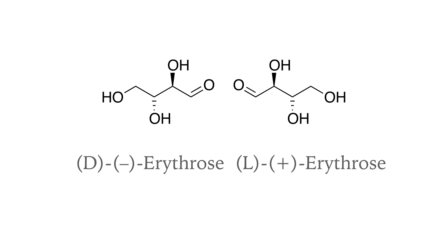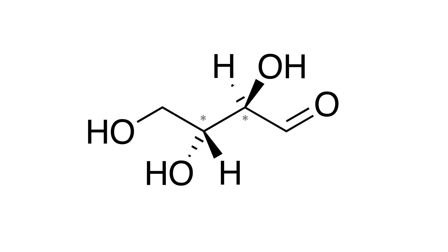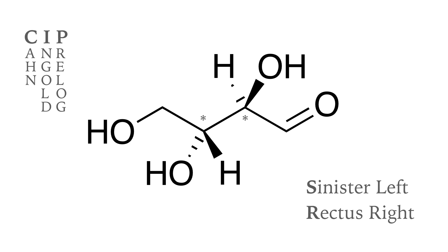Erythrose has two stereocenters. We can define both stereocenters independently with the so-called CIP nomenclature — this is the R and S nomenclature. Each substituent of a chiral carbon atom receives a certain priority. The atomic number of the neighboring atoms defines the priority of the substituents.